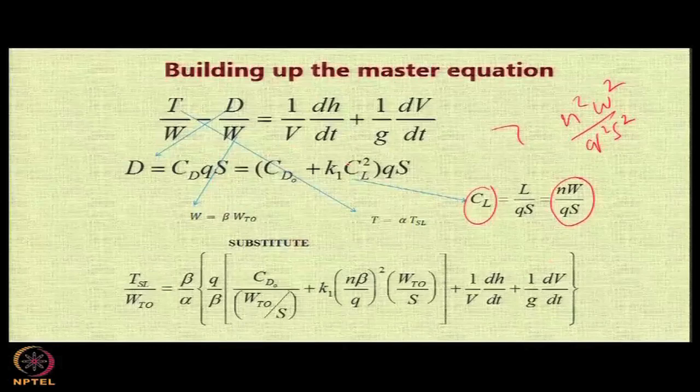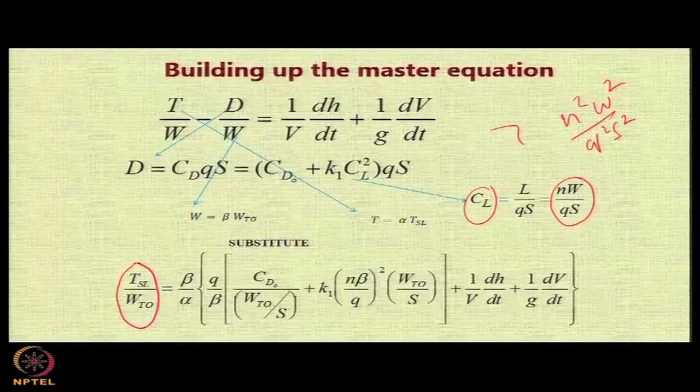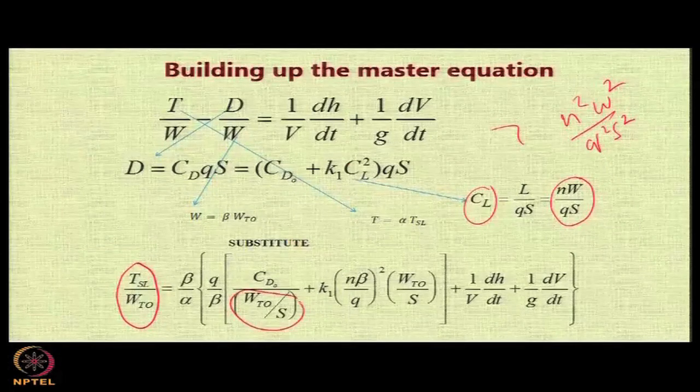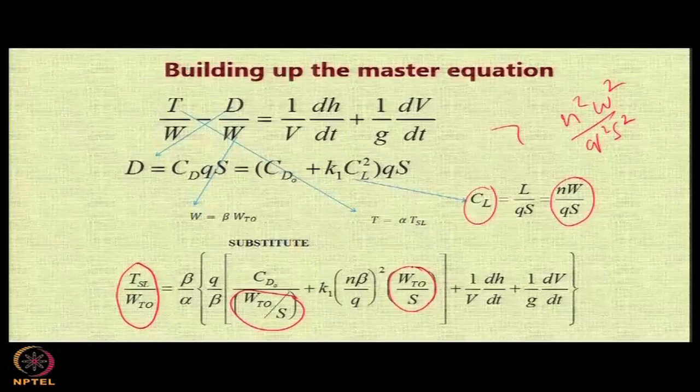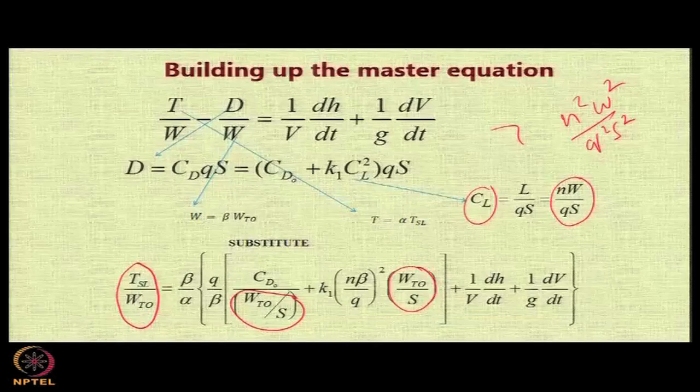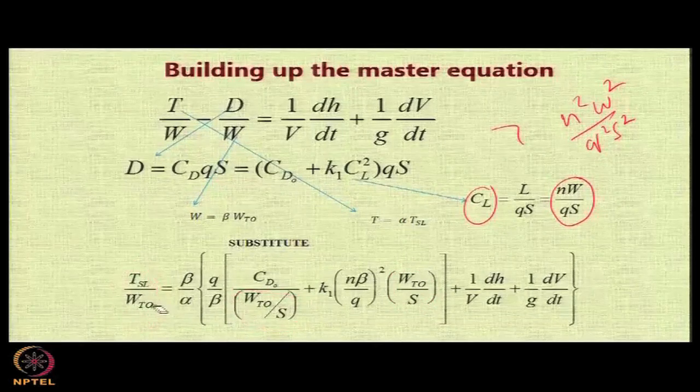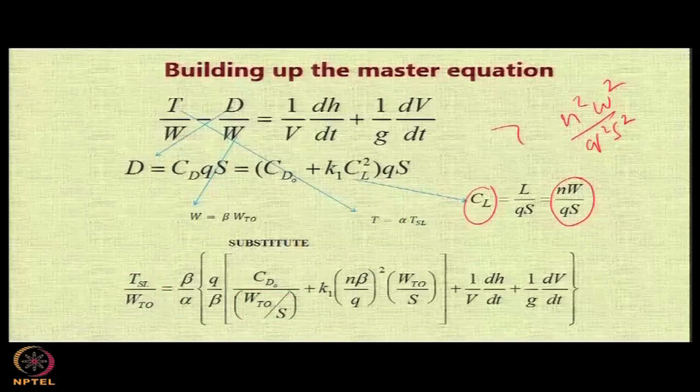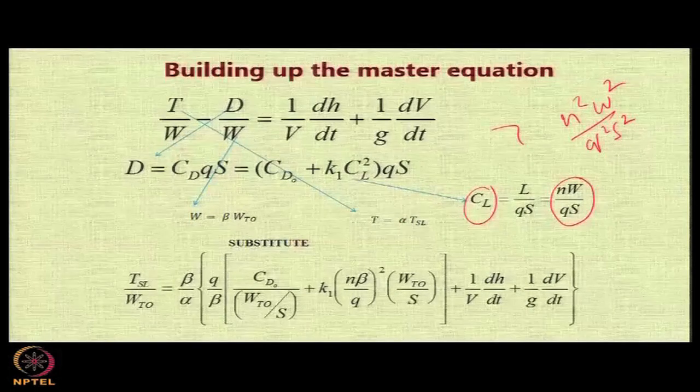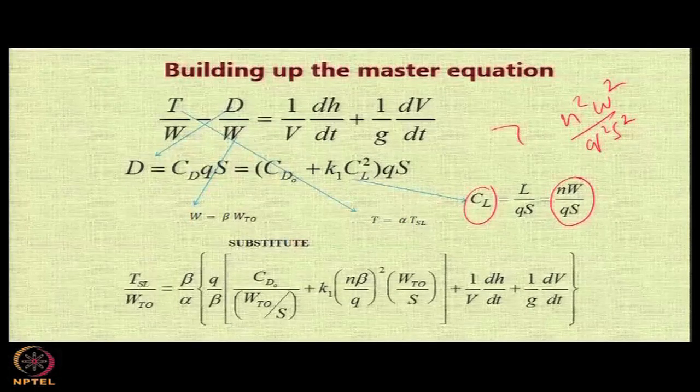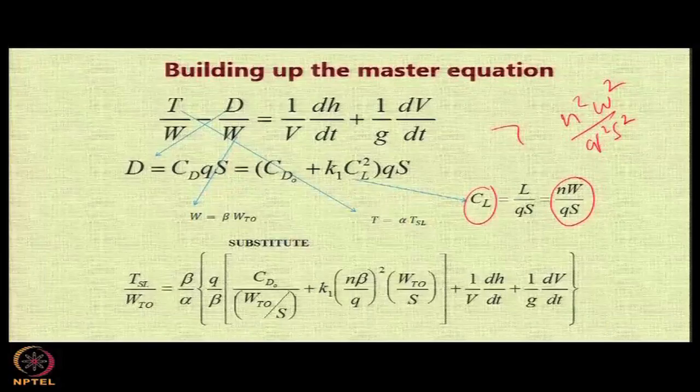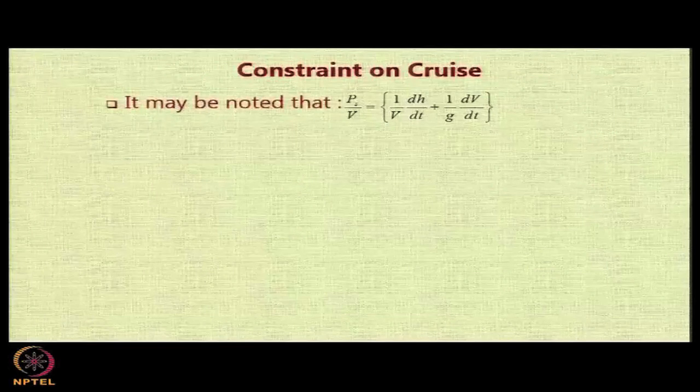What happens here is that on the LHS you have TSL by WTO, on the RHS you have WTO by S in the denominator here, WTO by S in the numerator here, and you have all the other parameters. One advantage of this particular expression is that there is no need now for you to worry about converting the values from the constraint value to the ground level, because now you are getting directly in terms of TSL by WTO and WTO by S through the values of β, α, and this expression can then be used for calculating any of the constraints specified here, except a few.